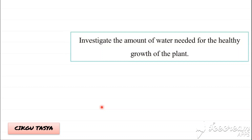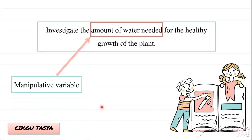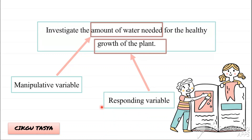This is what we call the aim of the experiment — this is how you find out your aim. So normally, from your aim, you can find out the Manipulative Variable and also the Responding Variable. We are going to investigate the amount of water needed, so we will change the amount of water — this is called the Manipulative Variable. For the healthy growth of the plant — what happens if you change the amount of water, how it responds, what are the effects of your changes — that is what we call the Responding Variable.